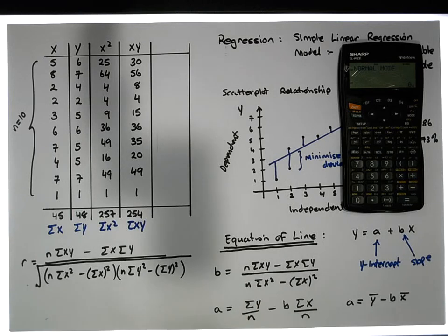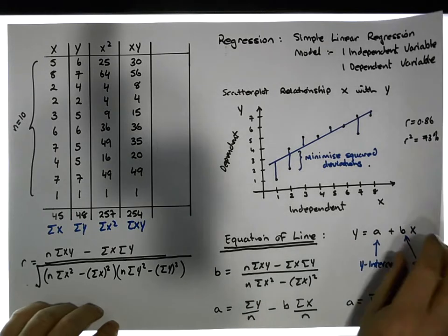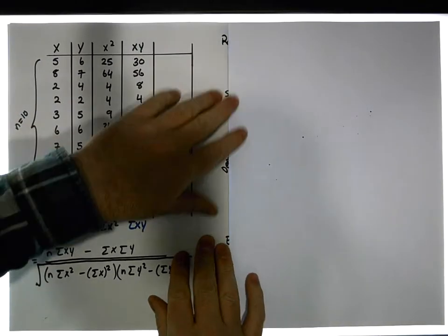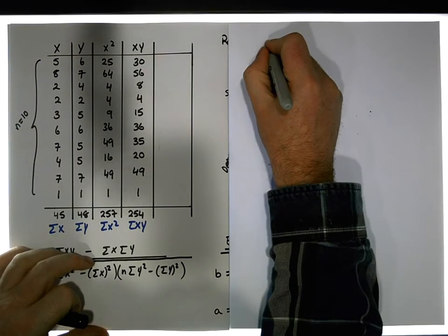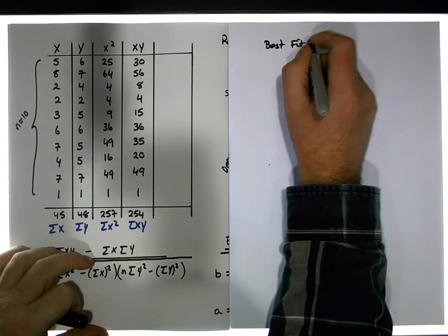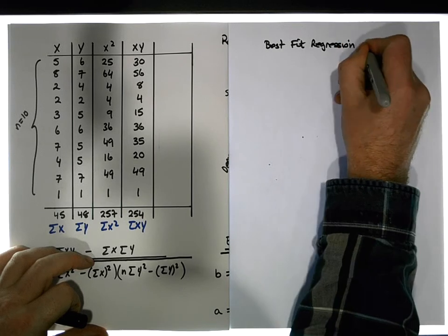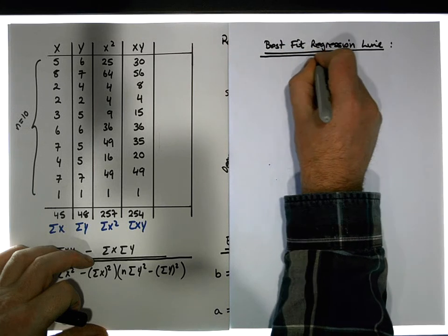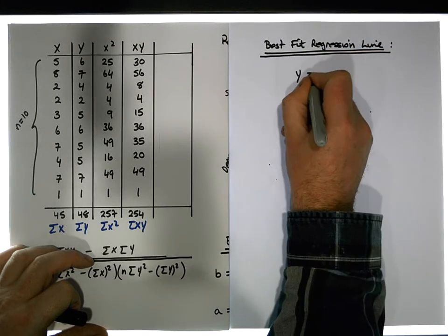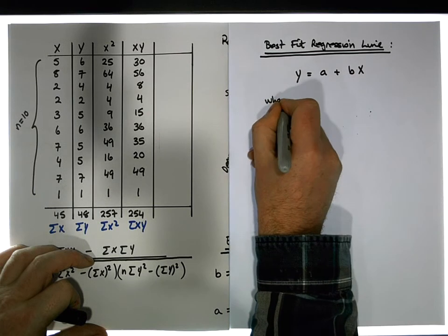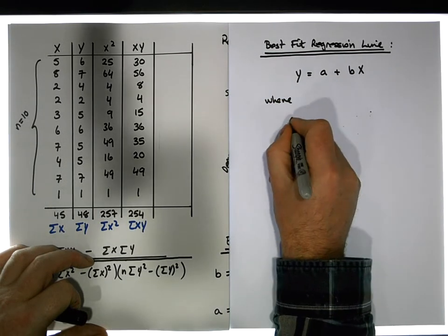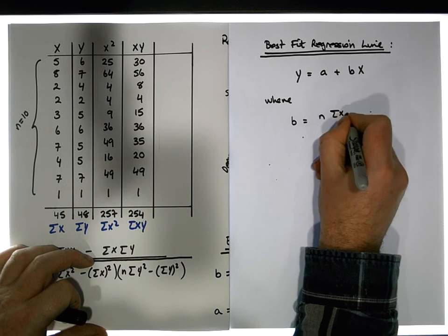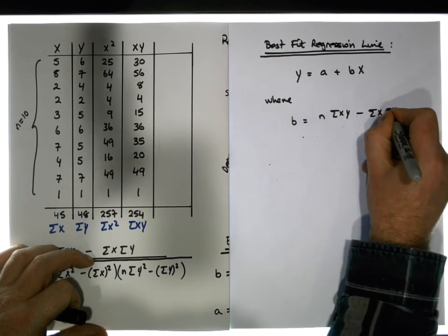We now have everything needed for our formula. Let's calculate the slope of the best fit line for this particular data set. Our best fit regression line is y equals a plus bx, where b is equal to n times the sum of the x·y's minus the sum of the x's times the sum of the y's, divided by...